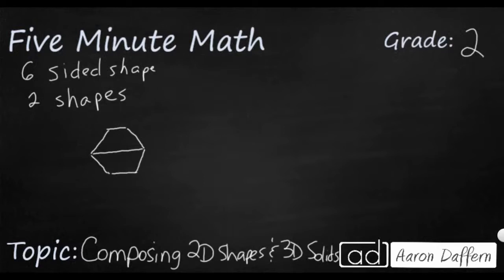You see I've got one, two, three, four, five, six. So I've got a six-sided shape. This is a hexagon, but I've built that with two separate trapezoids.